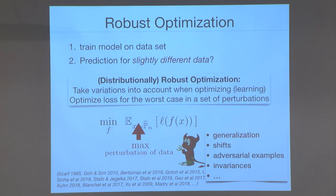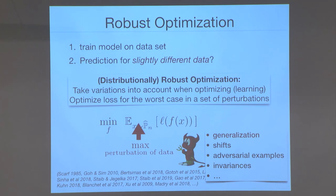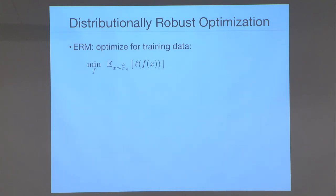I can't cover all of this today, so I'll focus specifically on how this relates to classical ideas of generalization in machine learning and how it can lead to a simple proof that you'll generalize. The framework I'll follow is called distributionally robust optimization — distributional because I allow perturbations not just of single data points, but of the entire data distribution.